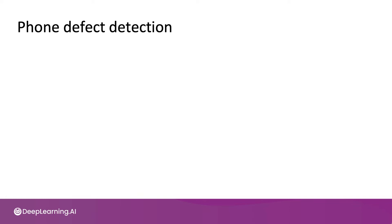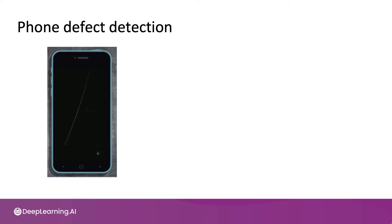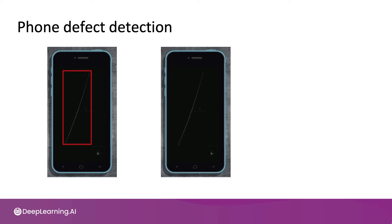Let's use the phone defect detection example. If you ask labelers to use bounding boxes to indicate significant defects, maybe one labeler will look at that and say the scratch is the most significant defect, and draw a bounding box on that. A second labeler may look at this phone and say there are actually two significant defects — there's a big scratch, and then there's that small mark called a pit mark, kind of like if someone poked a phone with a sharp screwdriver. I think the second labeler probably did a better job.